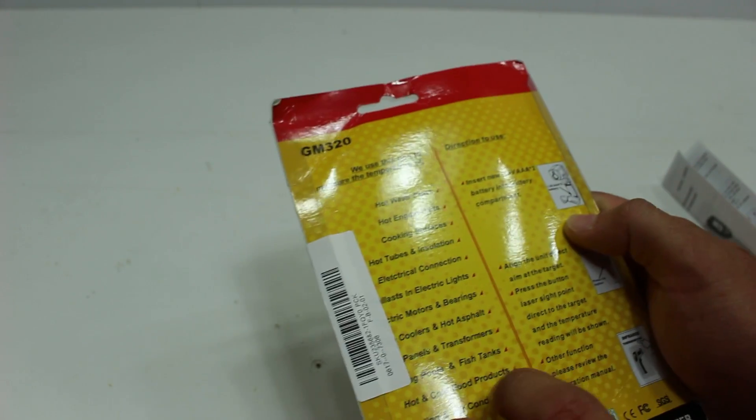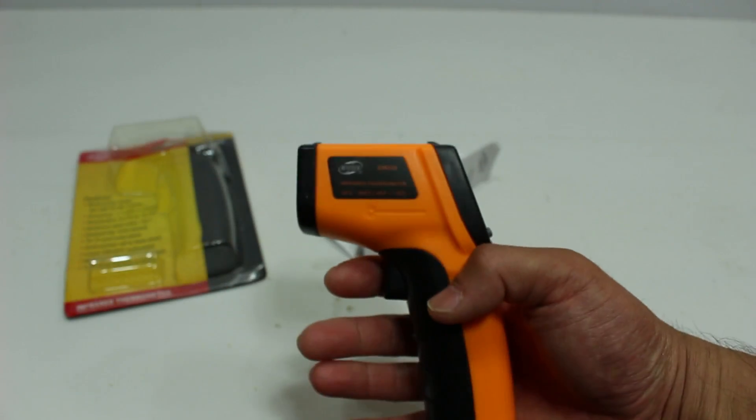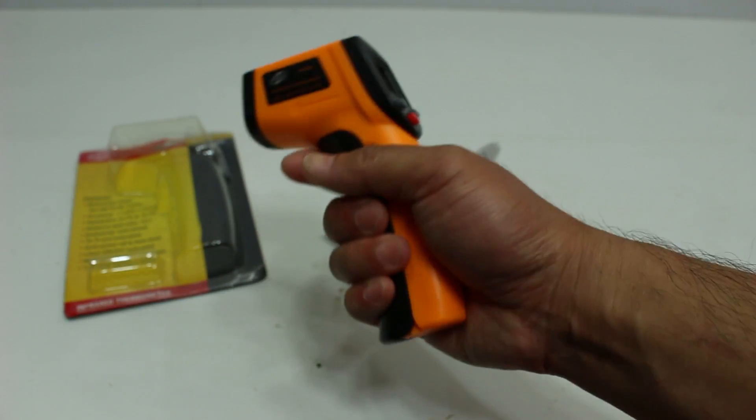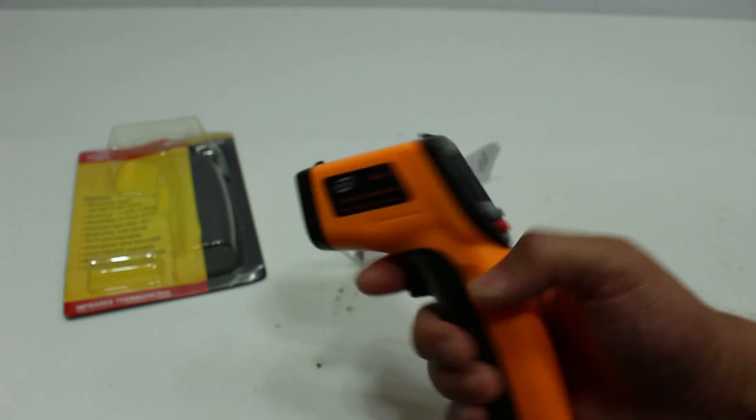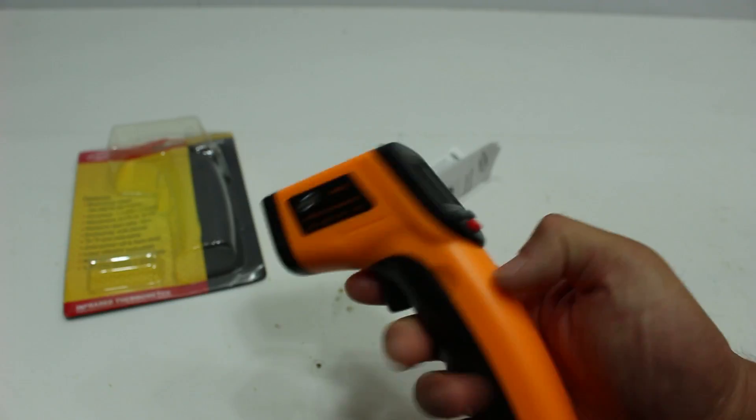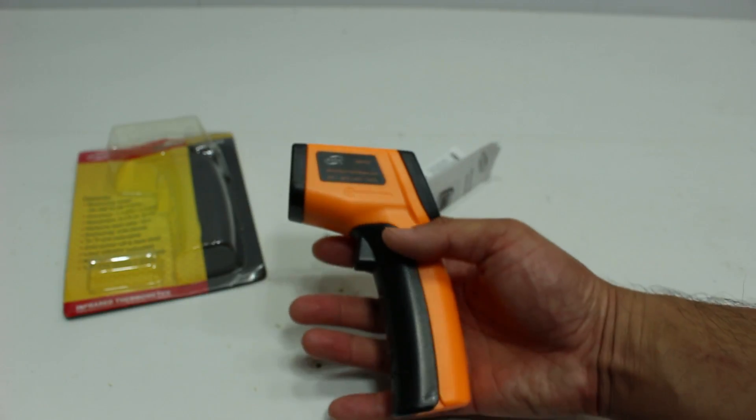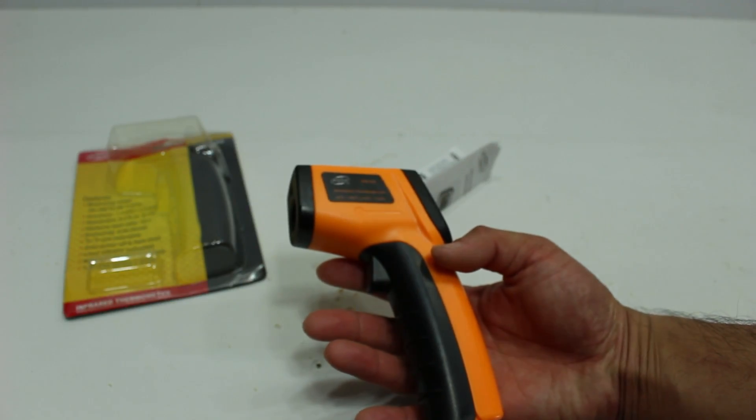It just came in this very basic package with a little manual. This is the unit right here. These are really neat. I've always wanted one. When they first came out, I remember they were like two to three hundred bucks about ten years ago, at least at the consumer level.